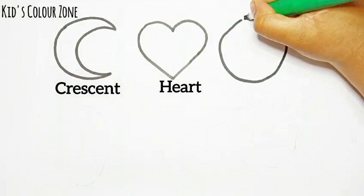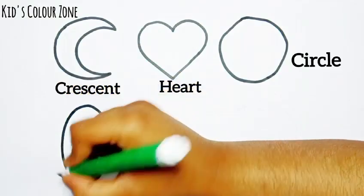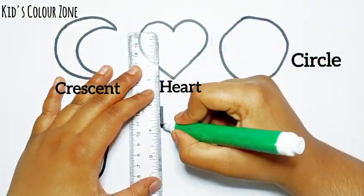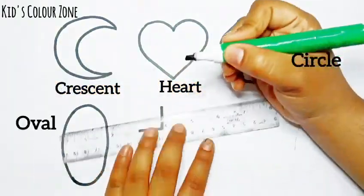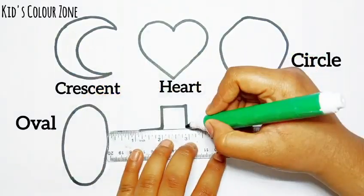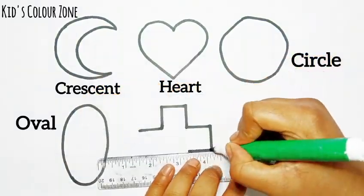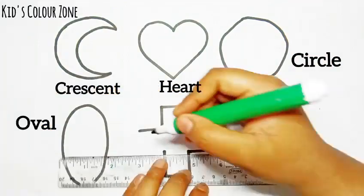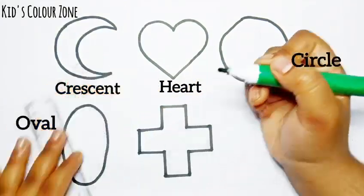This is a circle. This is an oval shape. This is a cross.